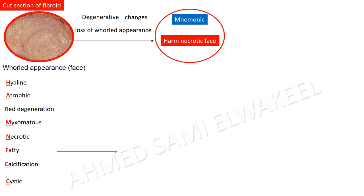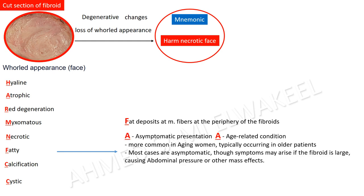Fatty degeneration mnemonic FAT: F — fat deposits add to muscle fibers at the periphery of the fibroids; A — asymptomatic presentation, age-related condition more common in aging women; T — trigger for calcification; Y — yellow in color and soft. Most cases are asymptomatic, though symptoms may arise if the fibroid is large, causing abdominal pressure or other mass effects.